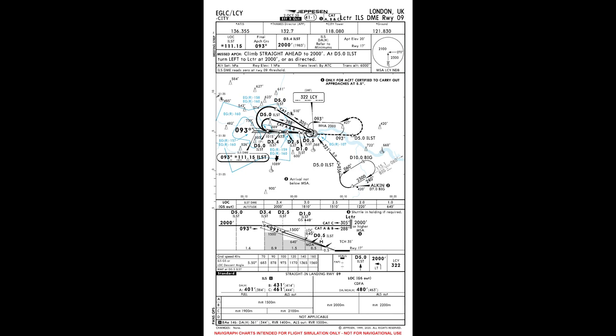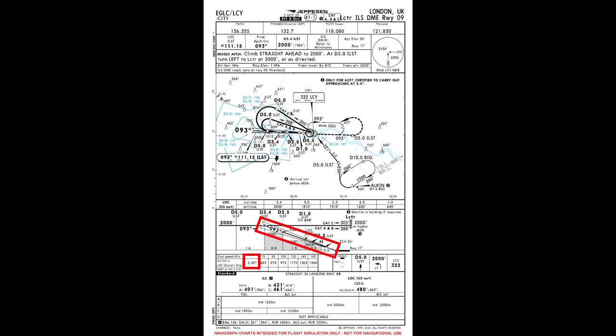In this video, we're going to do the ILS D&D Runway 9 into London City. Two things make this approach unique. One, there's no standard procedure turn — it's a teardrop procedure turn, not like what we're used to seeing. The second thing: the glide slope is 5.5 degrees. A normal glide slope is 3 degrees, so this is going to be almost twice the vertical speed when we're on the glide slope.